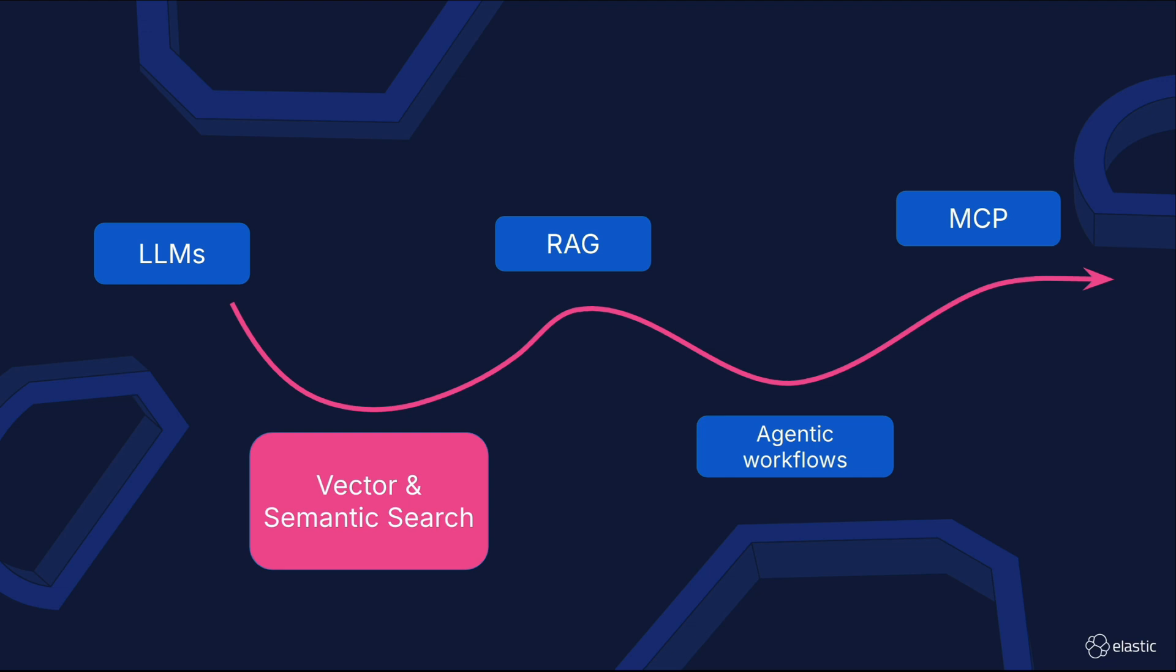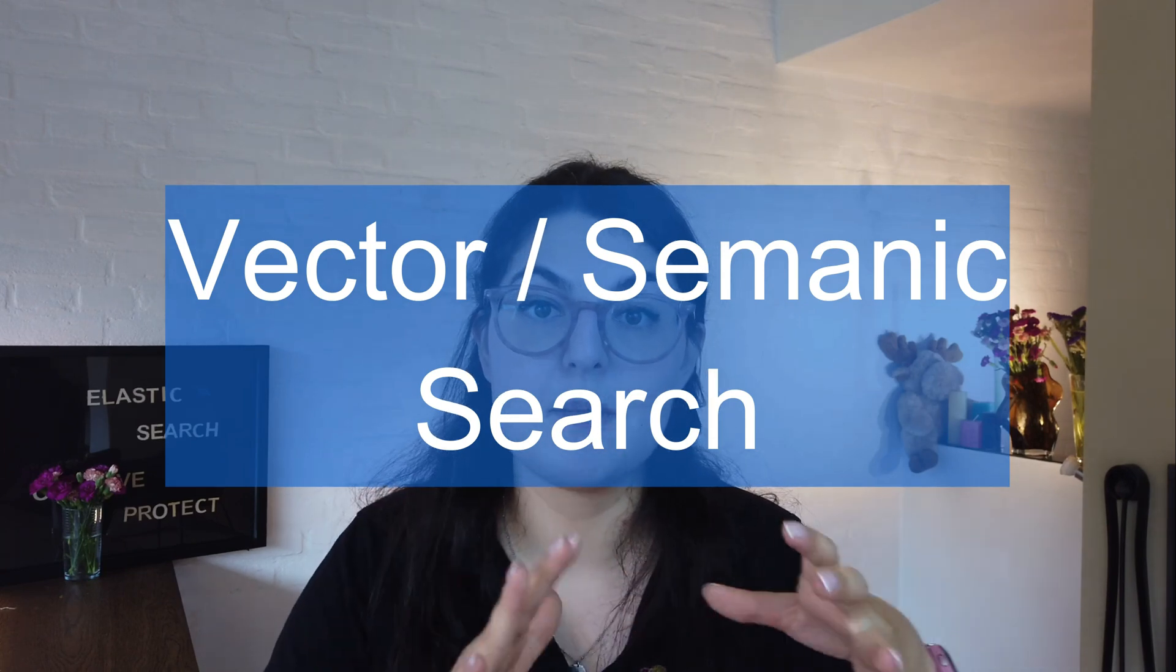In the first video, we've learned how large language models can be used to generate embeddings, thus allowing us to perform vector and semantic search with the text that has been turned into vectors. A key point here that links LLMs with what will later transition into the RAG phase is vector and semantic search.